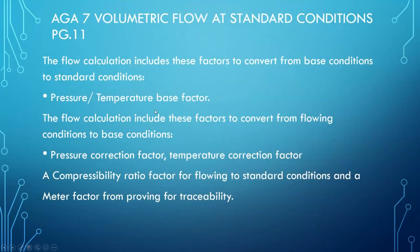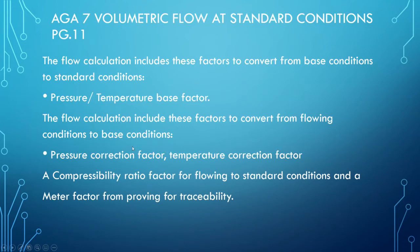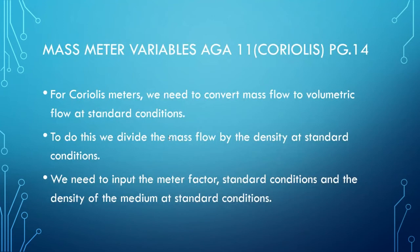AGA7 covers volumetric flow at standard conditions, as shown on page eleven. The flow calculation includes a number of factors to convert from flowing conditions to standard conditions: pressure and temperature base factors, a pressure correction factor, a temperature correction factor, and a compressibility ratio factor for flowing to standard conditions, as well as a meter factor from proving and traceability. Once it's all identified and configured, we don't have to worry about it too much after that.